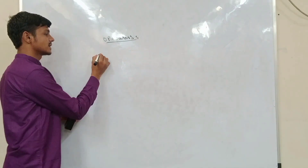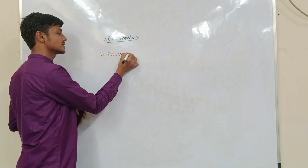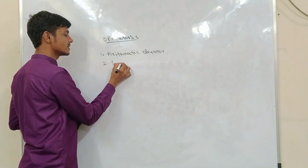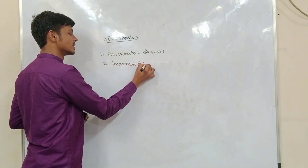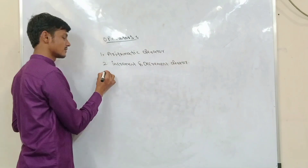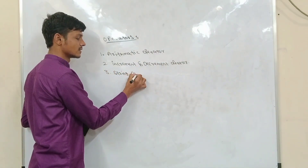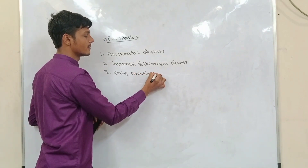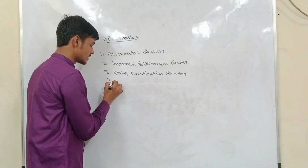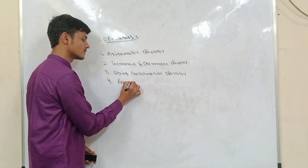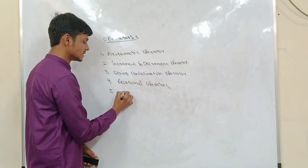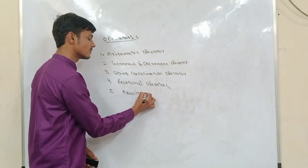Java supports around 15 plus operators. The first one is arithmetic operators. The second one is increment and decrement operators. The third one is string concatenation operator. The fourth one is relational operators. The fifth one is equality operators.